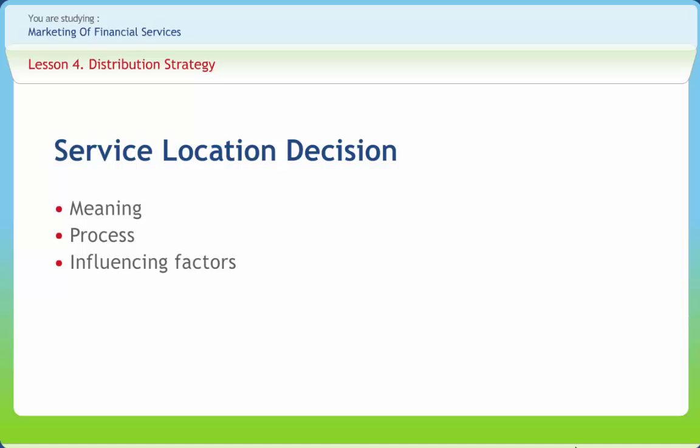Phase 1 develops location strategy from business strategy. A preliminary cost profile is used to determine relative emphasis on key qualitative and quantitative business criteria like labor, operational requirements, operating costs, quality of life or business, operating environment, and others.